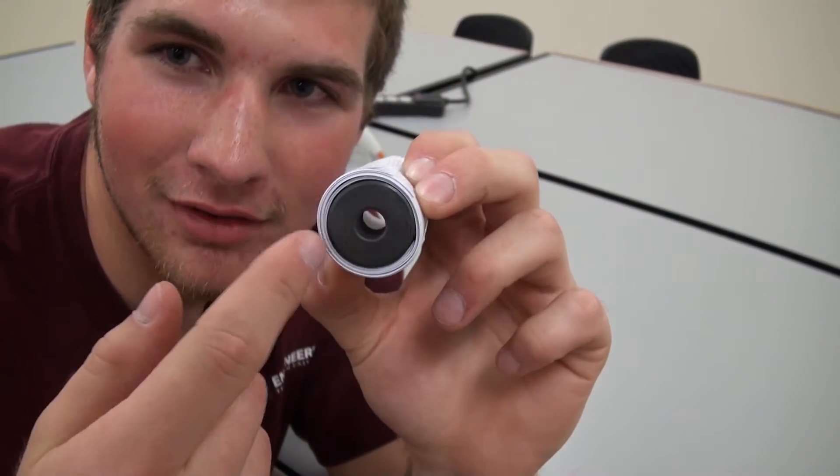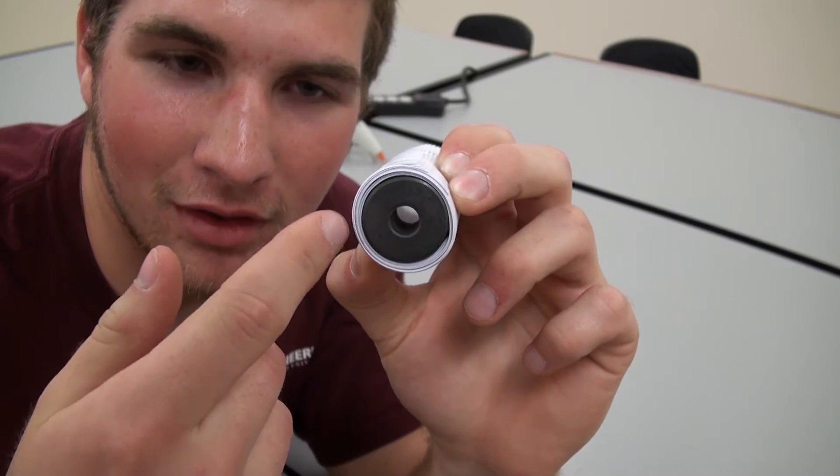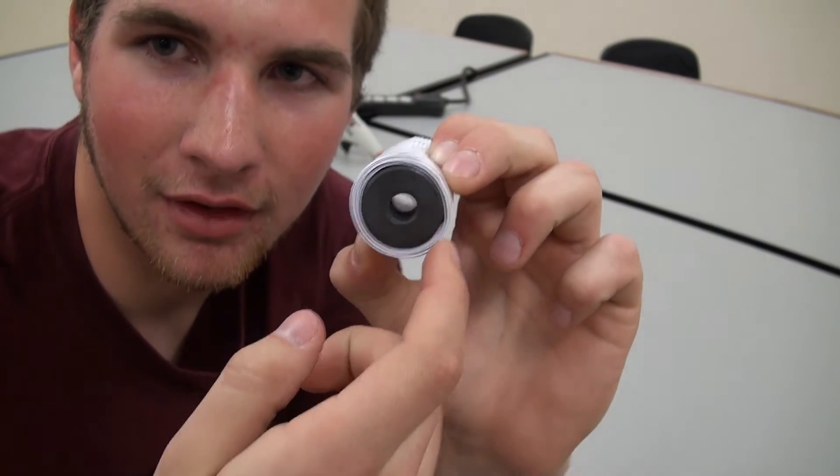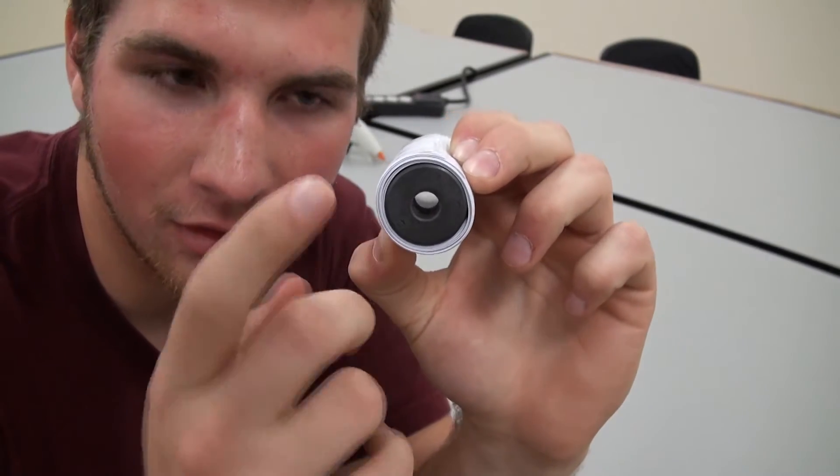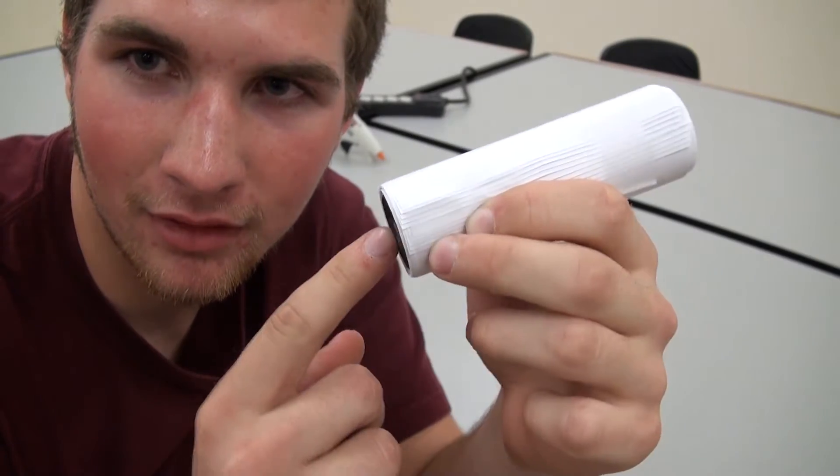Notice the thickness of this paper right here is sticking out of the magnet. This is how the coil is going to go around this, and you can see that the coil is going to be thicker than this magnet, so that it can move up and down.